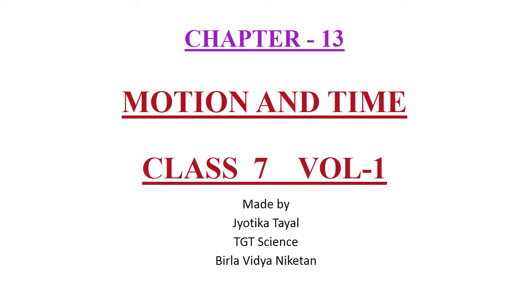Let's revise what we have learnt in our previous class. The different types of motions are: Rectilinear motion — motion of an object along a straight line, for example, motion of a car on a straight road. Circular motion — motion of an object along a circular path, for example, motion of the earth around the sun.